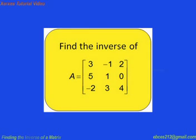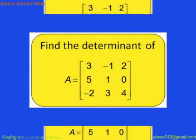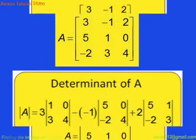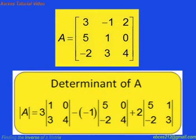The first thing we're going to do is find the determinant of this matrix. I always expand along the first row — it would actually be easier to expand along the second row because there's a 0 in there. We'll take 3 times the determinant of 1, 0, 3, 4, then use negative 1 times the determinant of 5, 0, negative 2, 4.